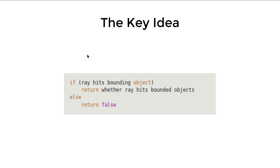The key idea of Bounding Volume Hierarchies is the following: for every object inside the scene we will have a bounding object, where the intersection tests are easier than the actual unbounded object. If the ray hits the bounding object that bounds the whole object, then we need to continue to check whether the ray hits the bounded object or not; otherwise we can exit early.